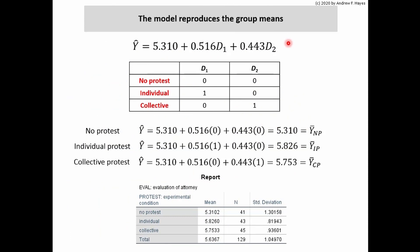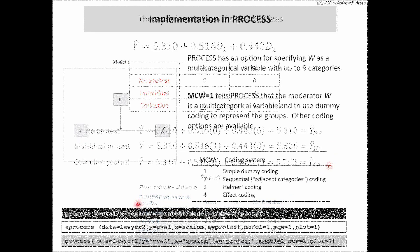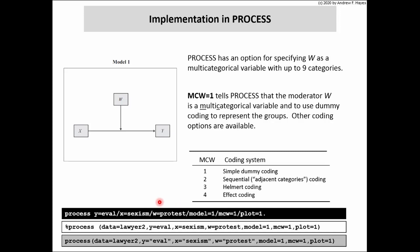You've got the data that represents which condition a person is in. I plug those patterns into the model, and notice that my model produces the group means. For everybody in the no protest condition, the model estimates 5.310 for Y — that's the group mean from earlier. For everyone in the individual protest condition, the model estimates 5.826 — that's the mean of the individual condition. Likewise for the collective condition. This will generate considerably less output than when we use the MCX option.